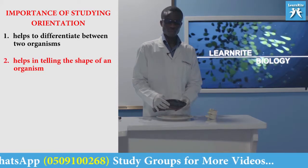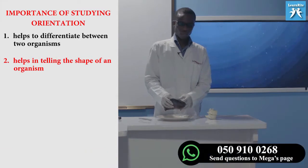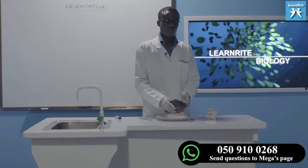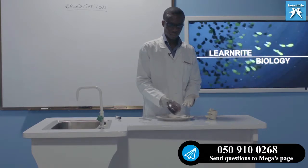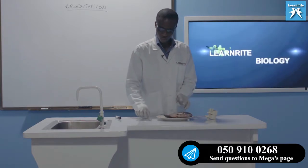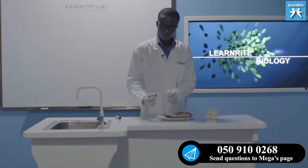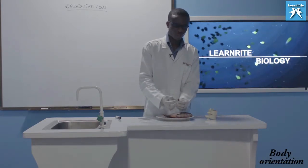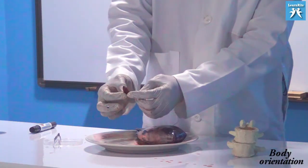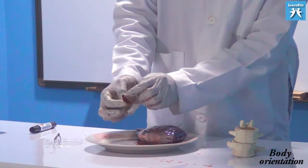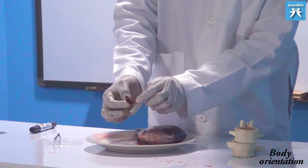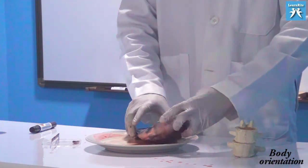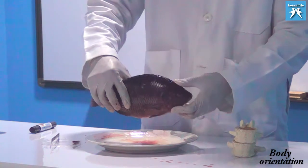It helps you describe the shape of organisms. If you look at tilapia, it is somehow flat. Look at the cockroach — the cockroach is also flat. The flatness of the cockroach is said to be dorsoventral. So the cockroach is dorsoventrally flattened. What about tilapia? It has two lateral sides, so we say it is laterally flattened.